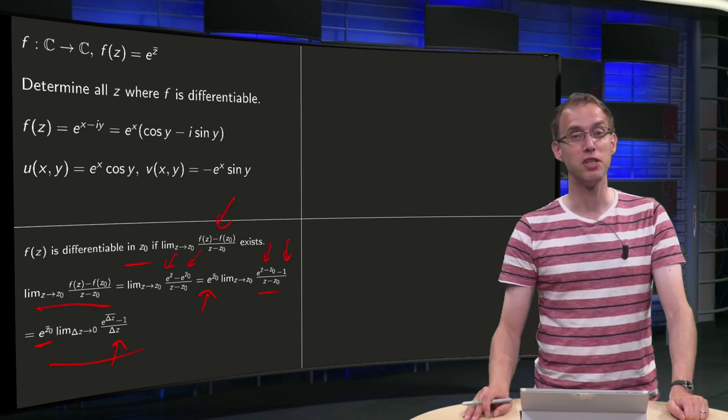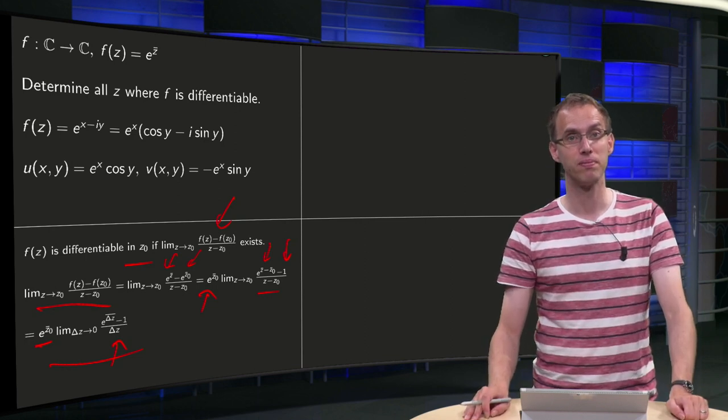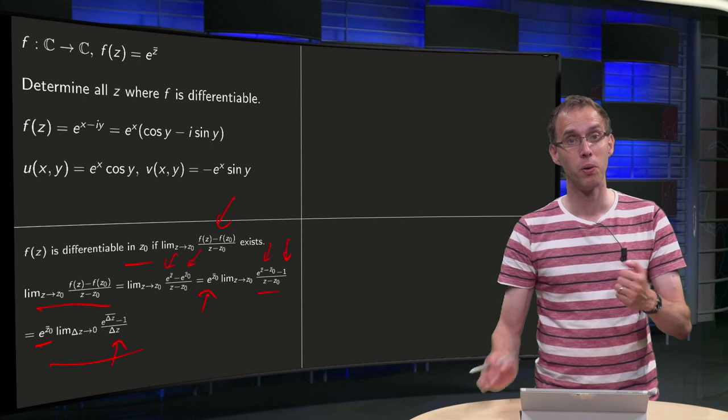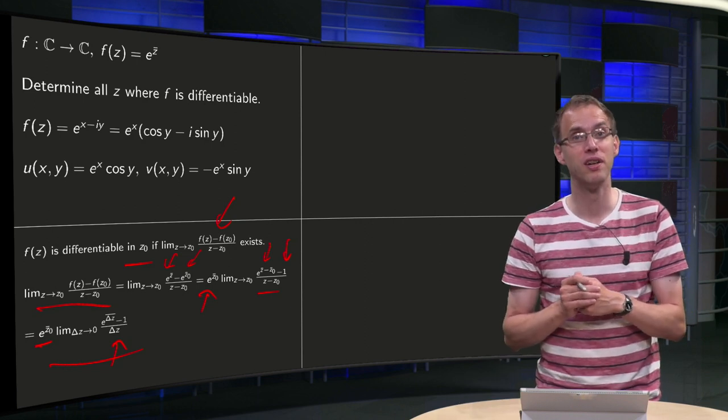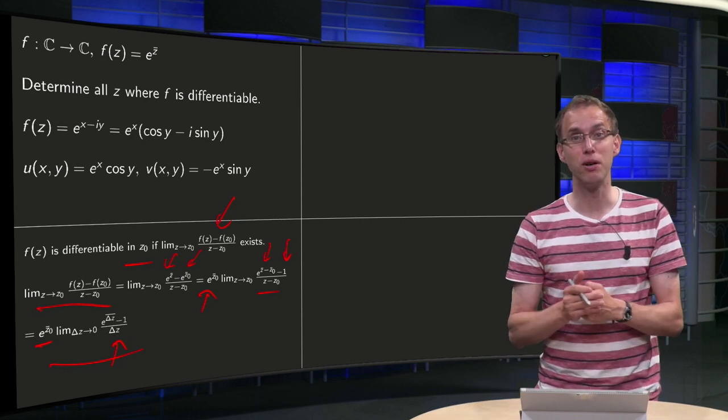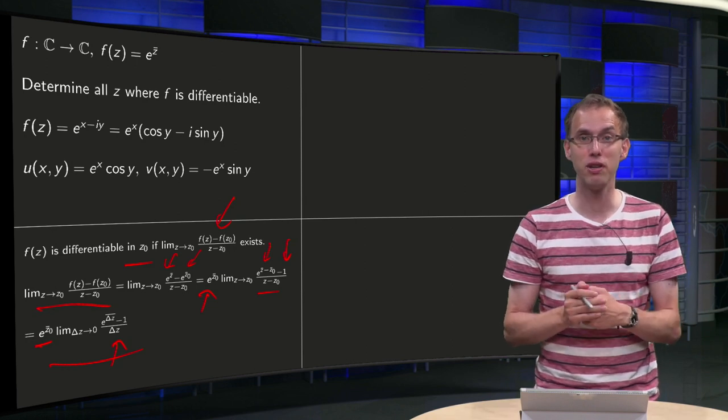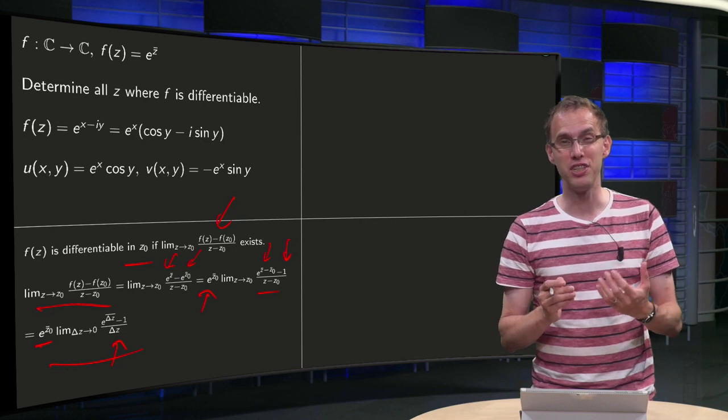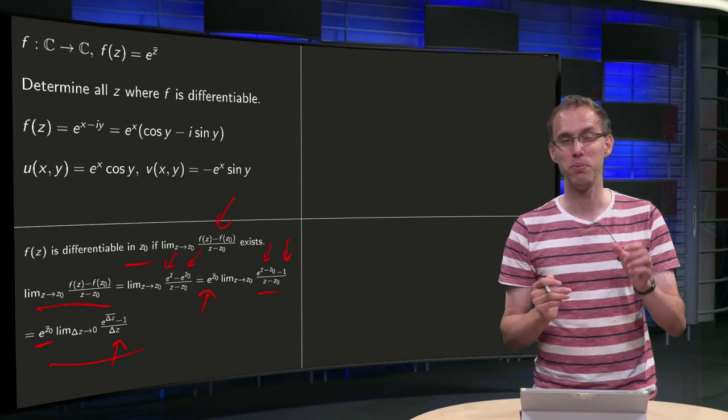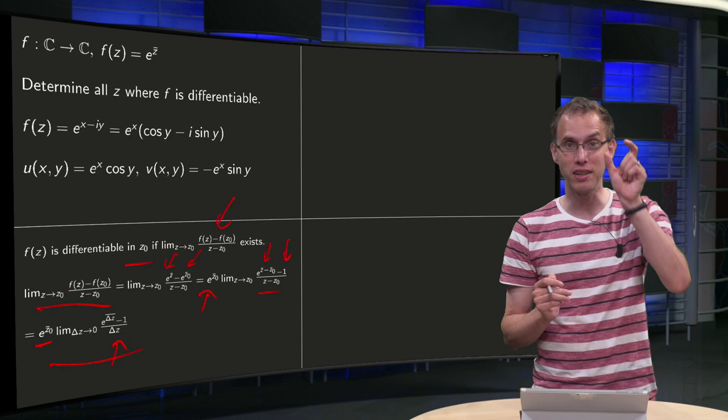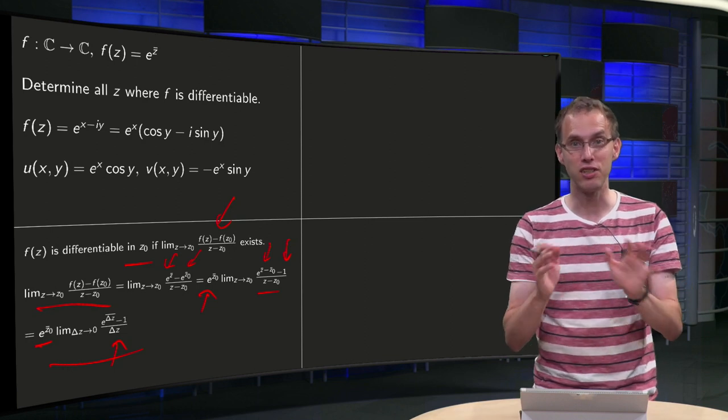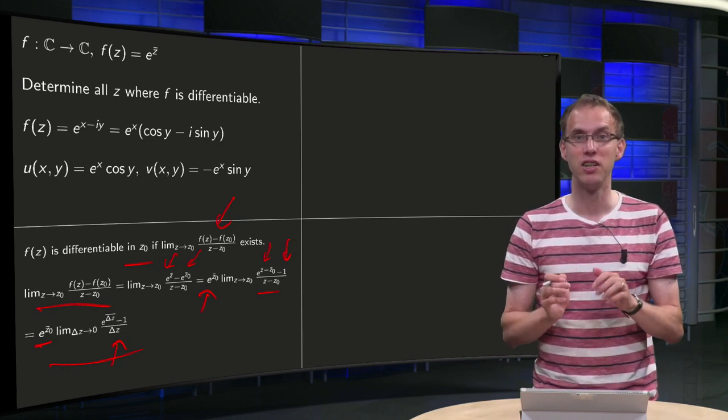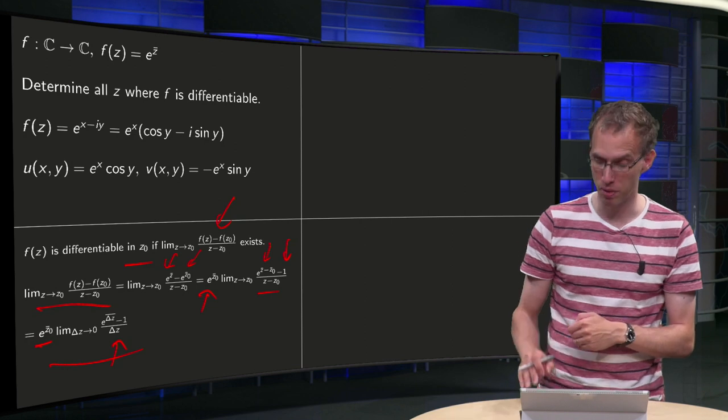Are there any mistakes so far? So far so good. However, how can we compute this limit? We are stuck here now, we have a difficult limit. But we already see that there might be a problem, because you may remember that if you have the limit Δz̄ over Δz, that this limit does not exist. So we already have the feeling that something will be going wrong.